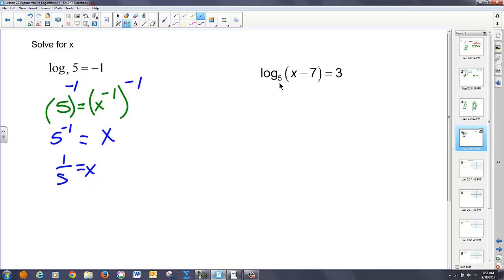Likewise over here, slide my base. I now have 5 cubed equals x minus 7. This is a simpler solution. That's 125 equals x minus 7. Add 7 to both sides and I get 132 equals x.